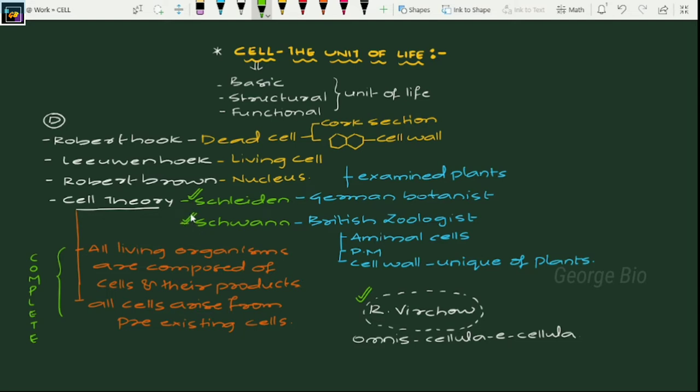If you are taking an organism, it should be made of cells and their products. However, there are certain structures that may not have a complete framework of a cell, so such things cannot be qualified under cell theory.